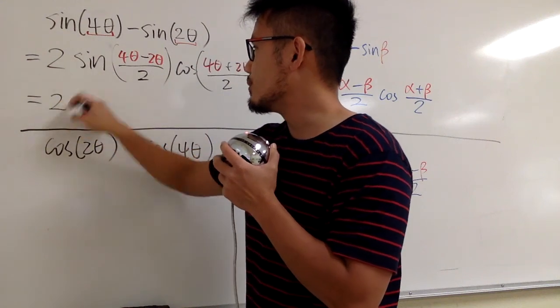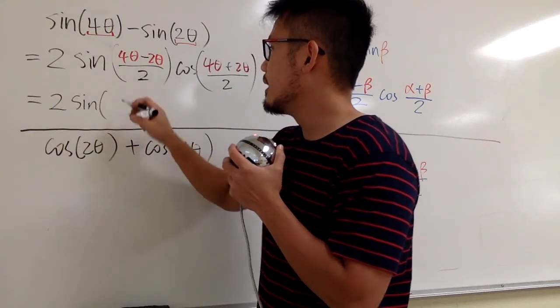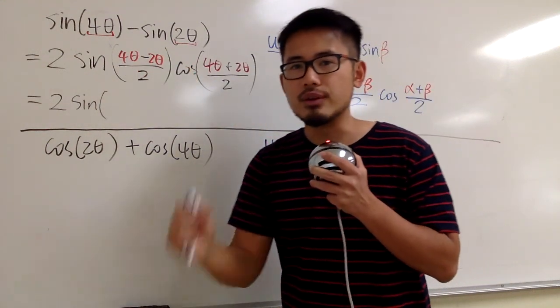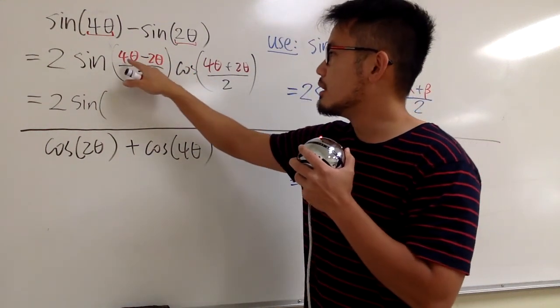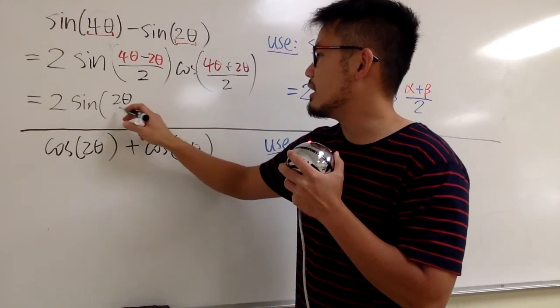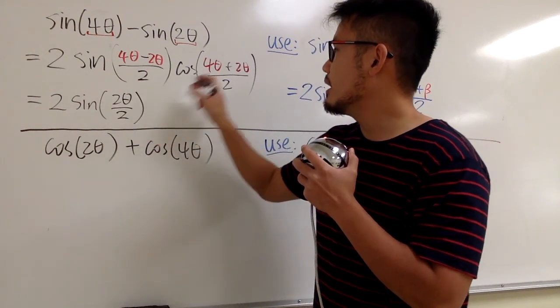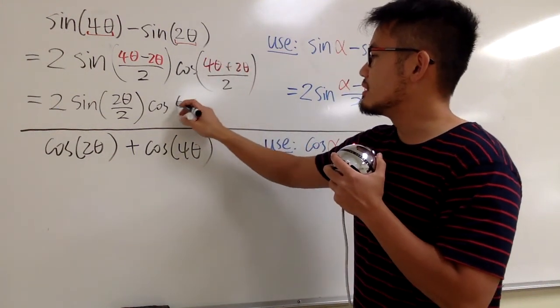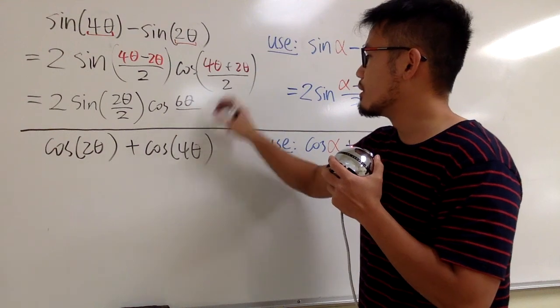So this is 2 sine. Well, what's this? 4 theta minus 2 theta, we work out the top first. Combine terms, 4 minus 2 is just 2, and then of course that's still theta, and we still have over 2. And then cosine, 4 theta plus 2 theta gives us 6 theta, and then over 2.